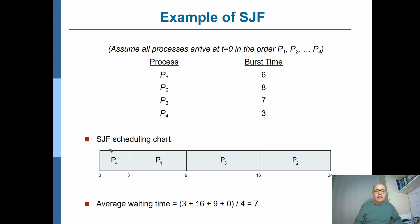So we will first run P4, then P1, P3, and P2, which will have waiting times of 0, 3, 9, and 16 respectively. If you take the average, it would be 7 milliseconds. That means you cannot find an algorithm that will have a lower average waiting time — it could be at best 7 milliseconds.